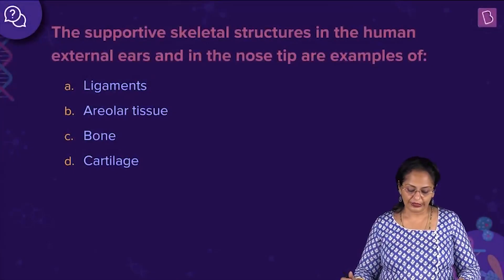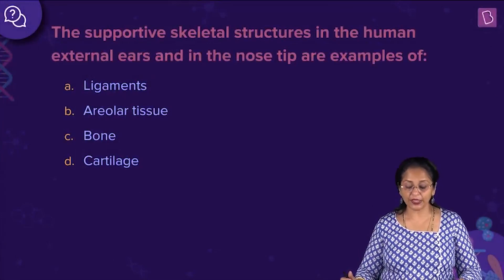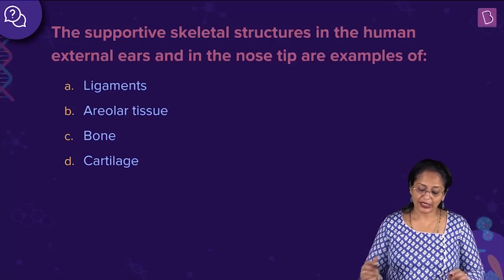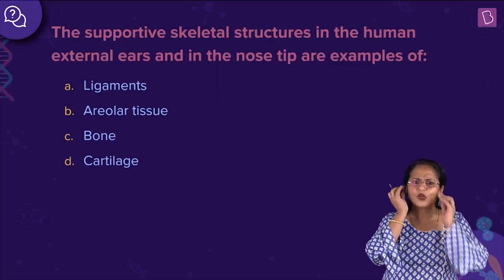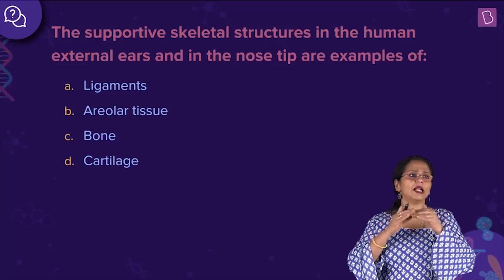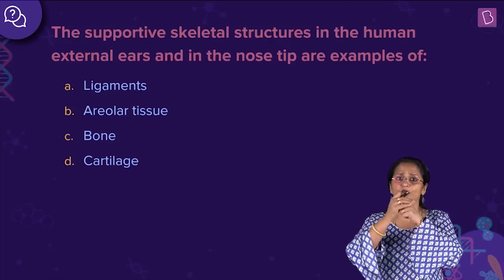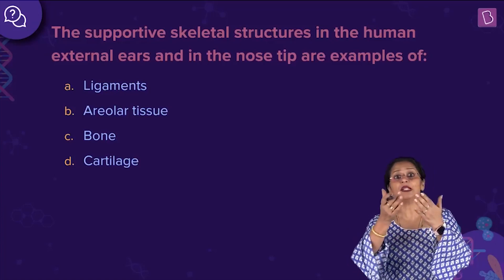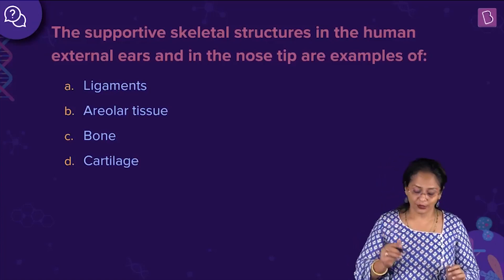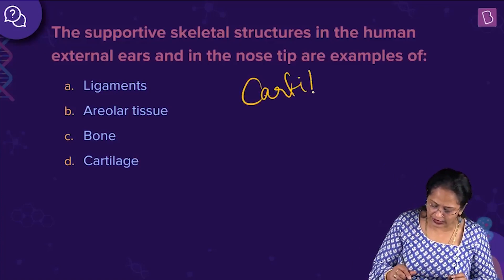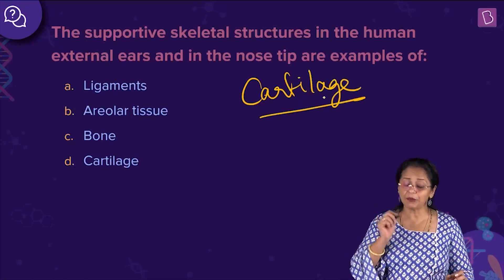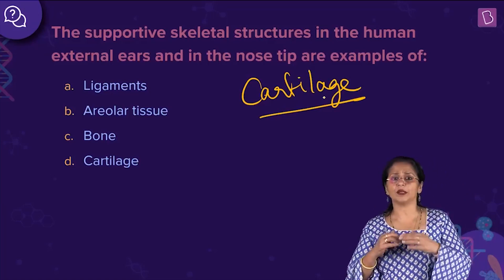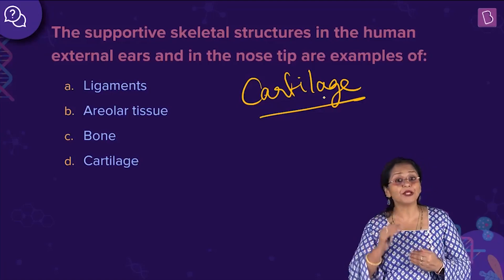Now let us look at this question: the supportive skeletal structures in the human external ears and in the nose tip are examples of which tissue? Is it ligaments, areola tissue, bone, or cartilage? What do you find at the tip of your nose, the external ear pinna, between long bones at the articulating joints, or between vertebrae? You find a specialized connective tissue called cartilage. It is flexible but tough at the same time.